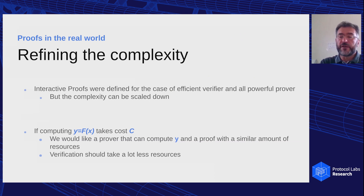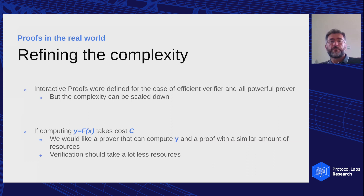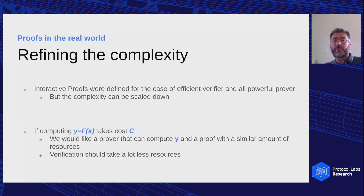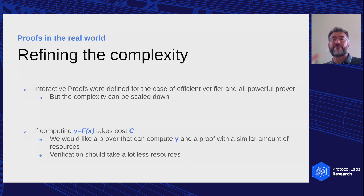When interactive proofs and interactive arguments were introduced, they were really about an all-powerful prover trying to convince a polynomial time verifier. Then we came up with arguments where the prover was also polynomial time but had more knowledge than the verifier. We were still stuck in this notion of polynomial versus super-polynomial, but in reality the complexity can be scaled down — you can think of this game of proving with an imbalance of power between the prover and the verifier, even inside the class of polynomial computable functions.